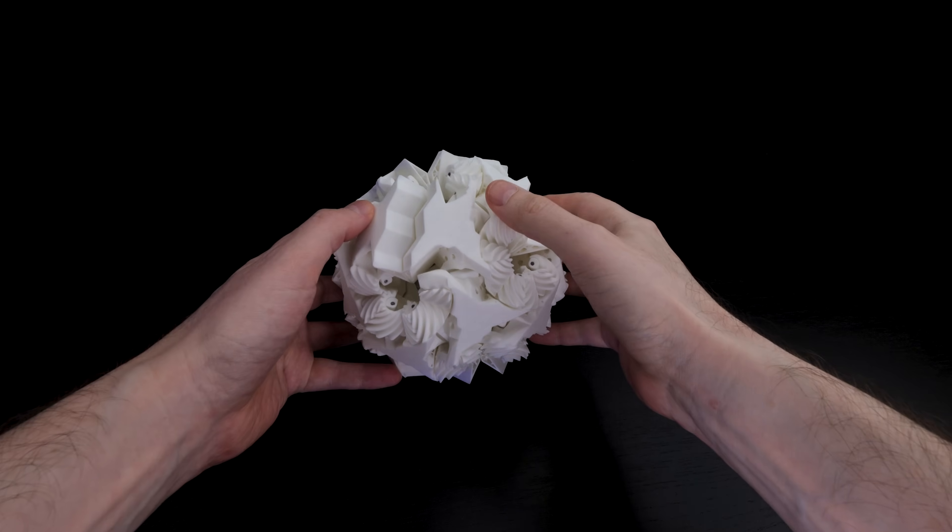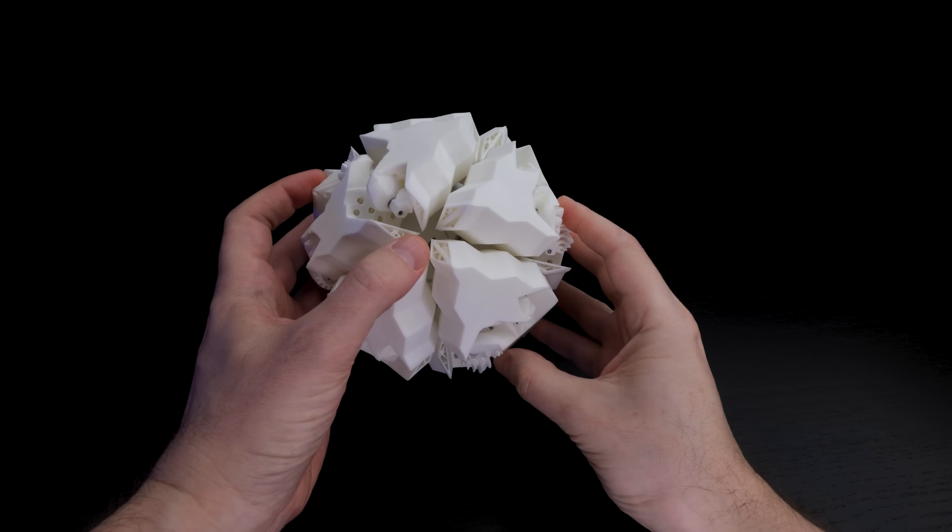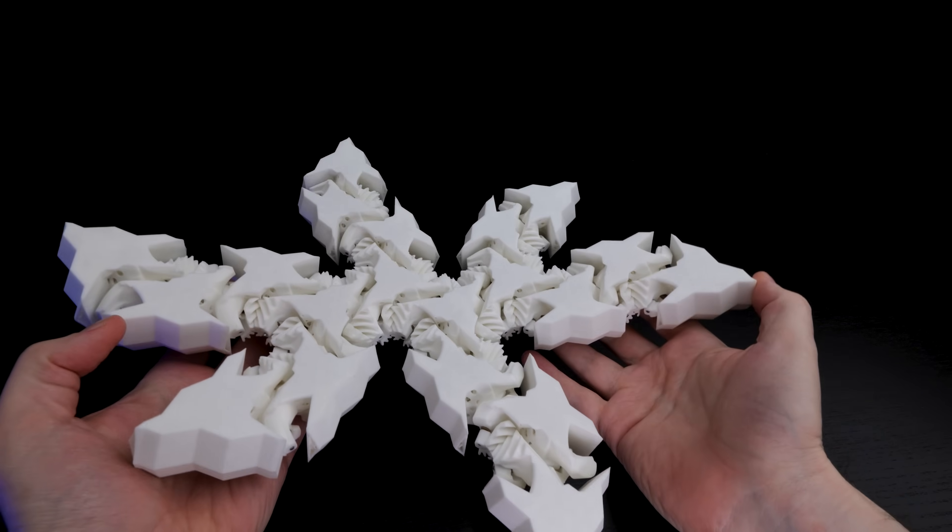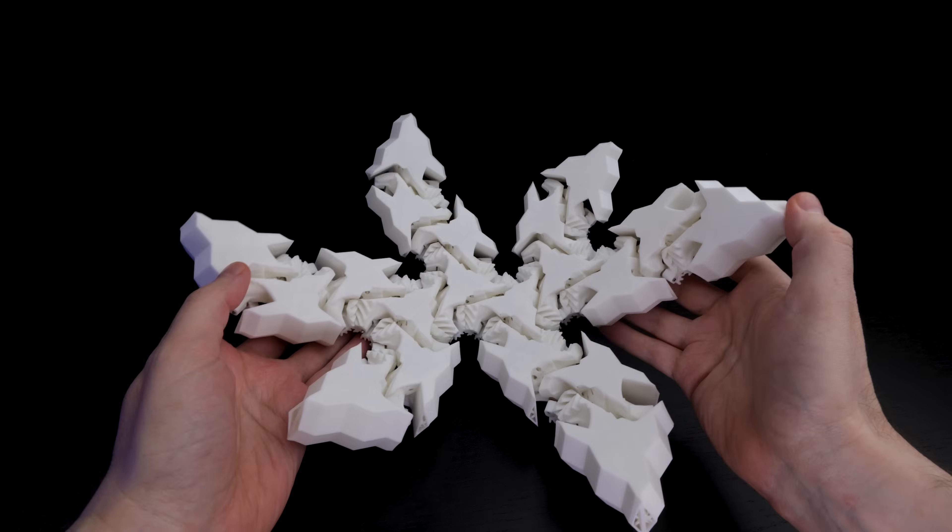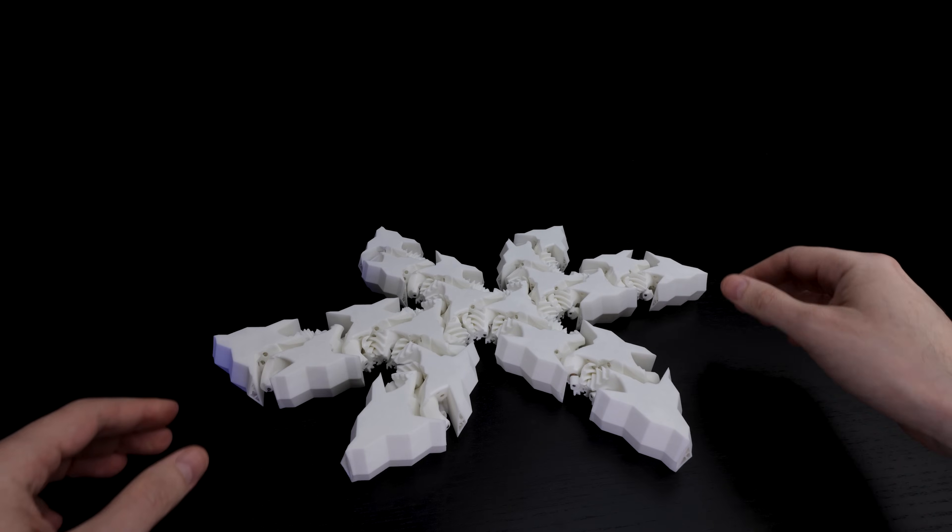Hi, I'm Henry Segerman and this is a thing. It's a sphere that opens up into a kind of claw shape and then it can lie flat on the table. In fact, it can also close up into a sphere in the other direction.